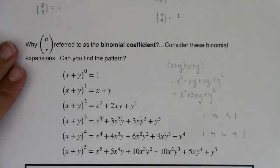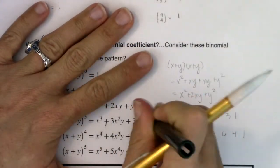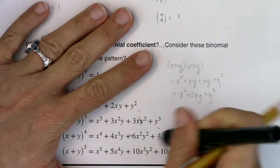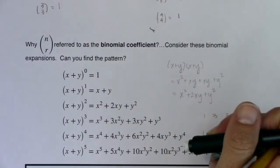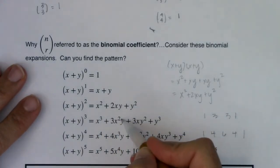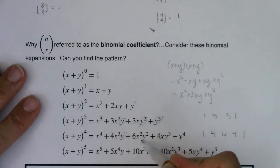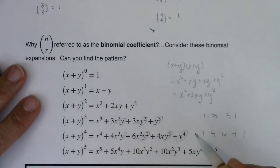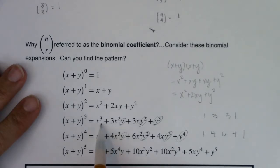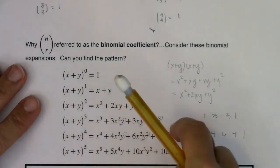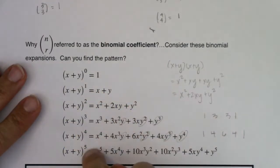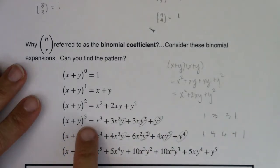What's happening to the powers on y? If I take a look at the powers on y: there's none here, then it's y to the first, y squared, y cubed. And here: no y's, then y to the first, y squared, y cubed, y to the 4th. So the powers on y are ascending. For the cubic: no y's, 1, 2, 3. For the fourth power: no y's, 1, 2, 3, 4. The powers on x are descending, the powers on y are ascending, and the coefficients are the binomial coefficients — 1, 3, 3, 1, and here 1, 4, 6, 4, 1.